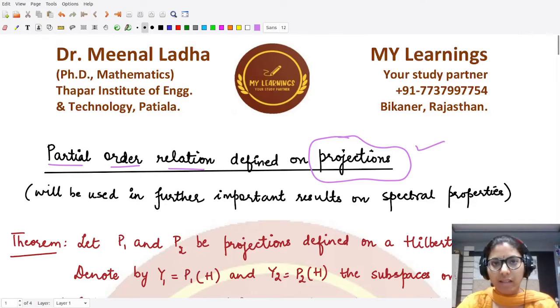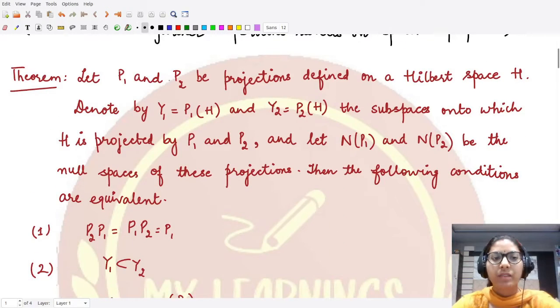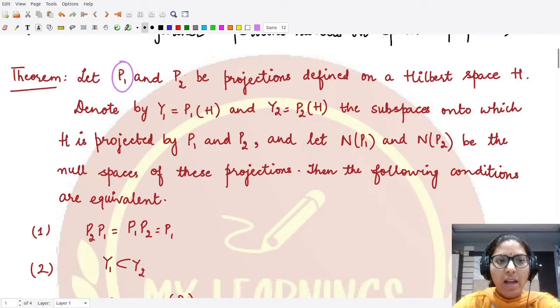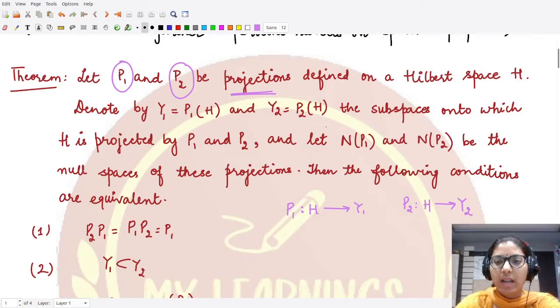Let's have a look at the theorem here. It tells us that whenever we have P₁ and P₂ as two projections, these are given to be two projections which are defined on a Hilbert space. That means P₁ is a projection, basically a linear map which maps the whole of the given Hilbert space onto the space which is Y₁, and we have P₂ which is the projection which maps the whole of this Hilbert space to the space which is Y₂.